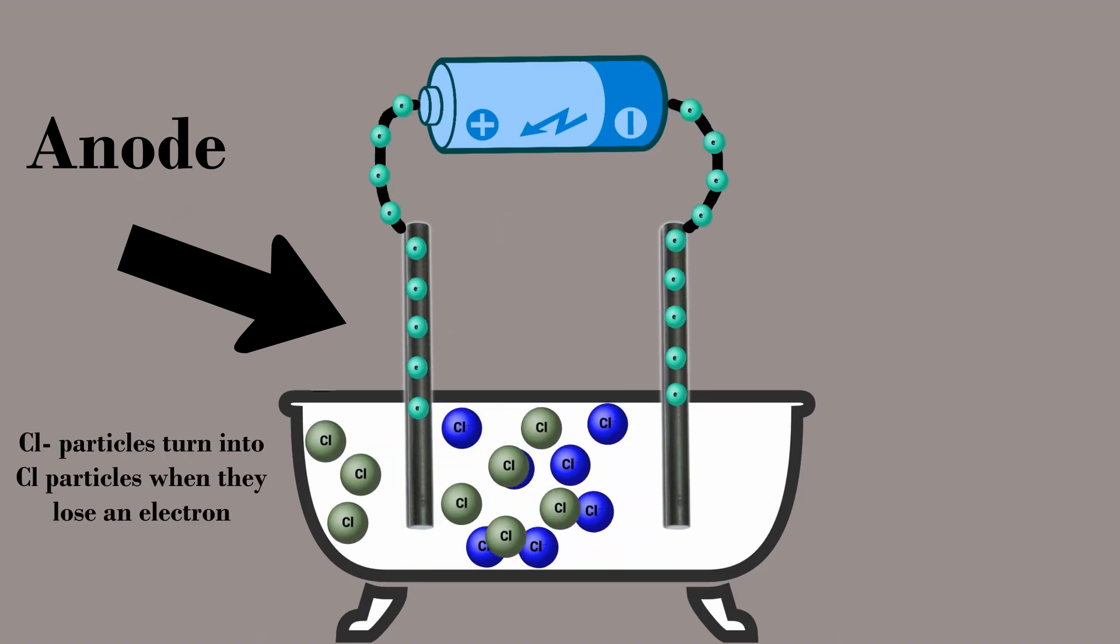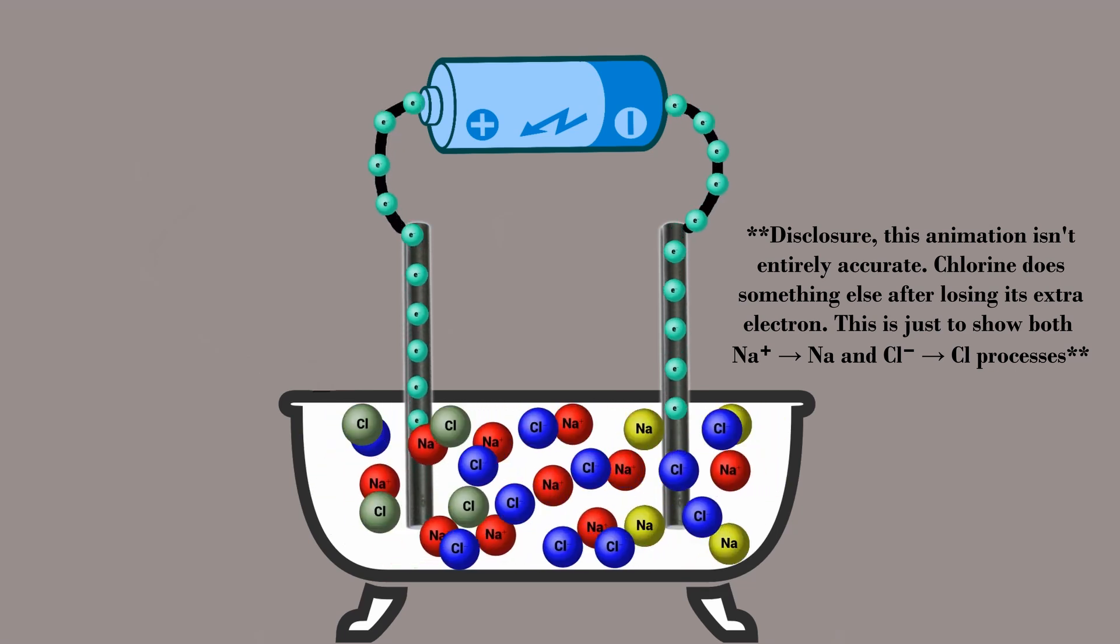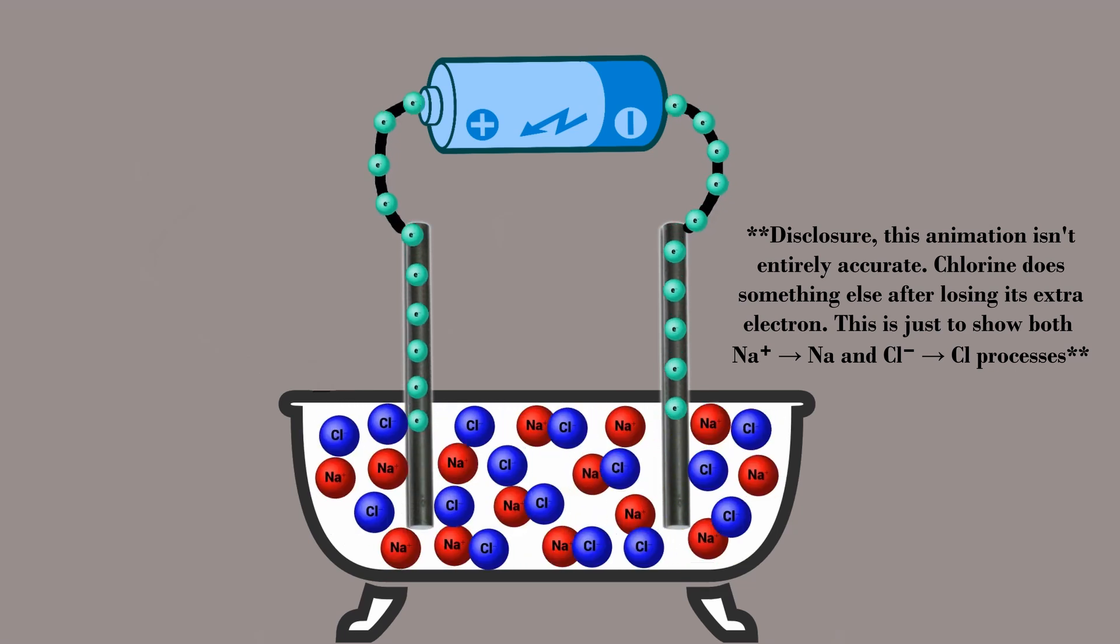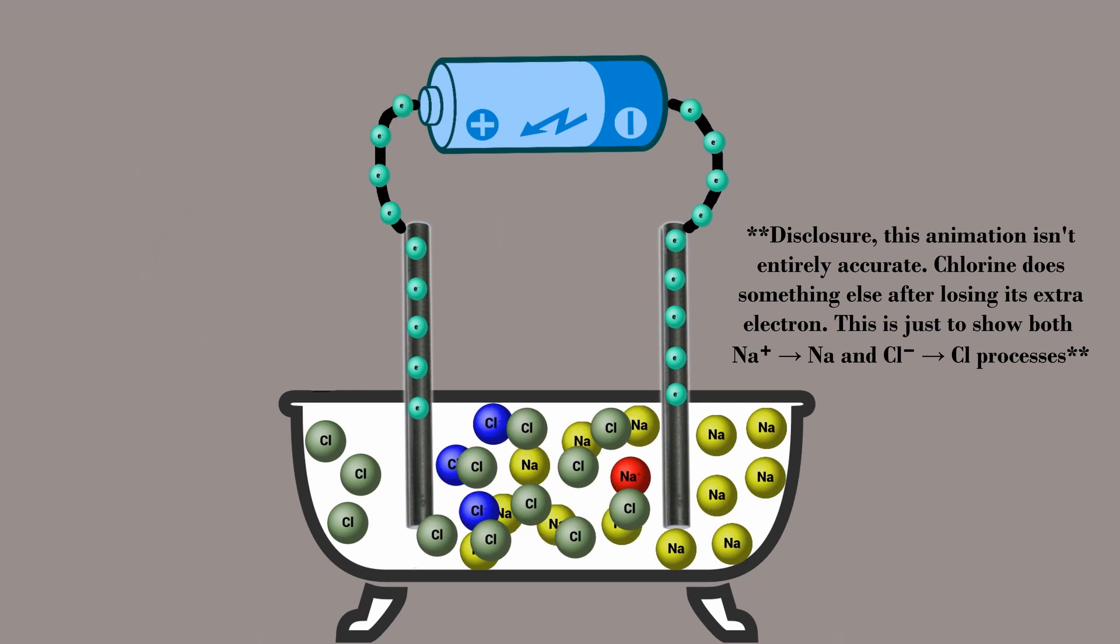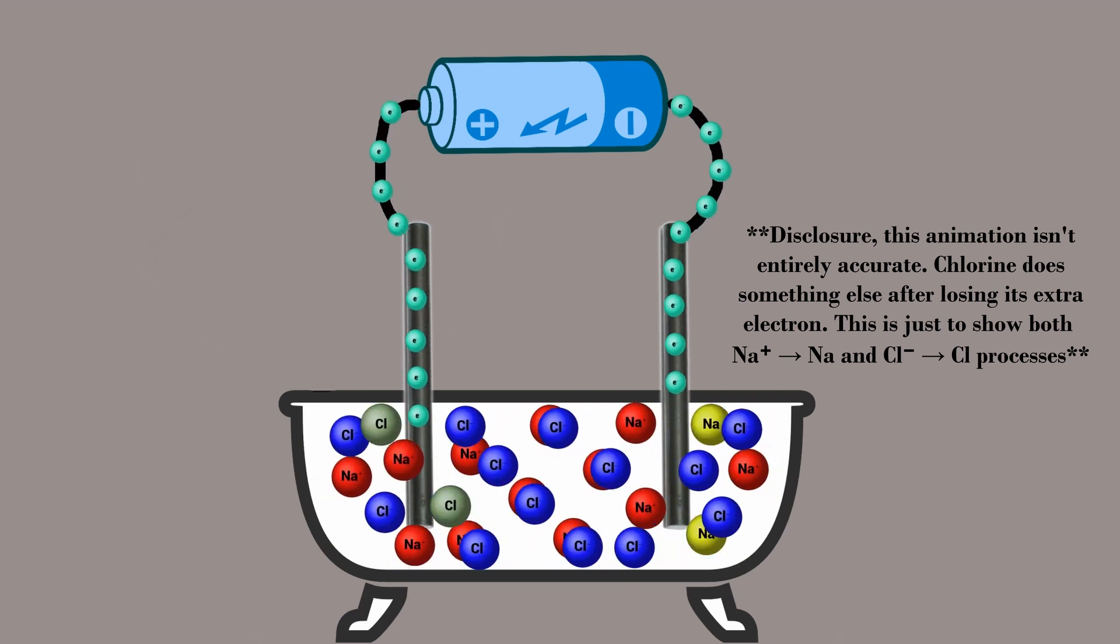The anode then attracts the negatively charged chlorine ions. In the end, the electric current is supplied by the extra electrons in the chlorine and the lack of electrons in the sodium until all sodium and chlorine atoms have balanced out to their equilibrium state.